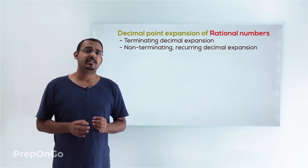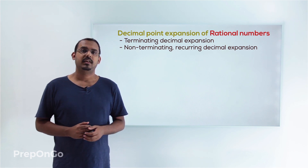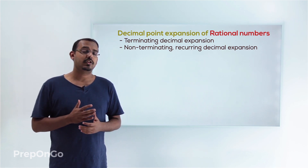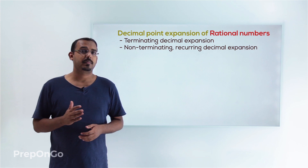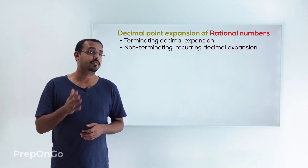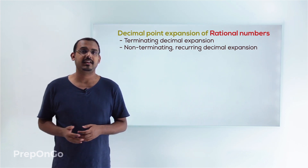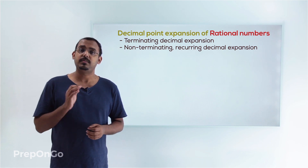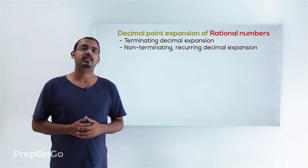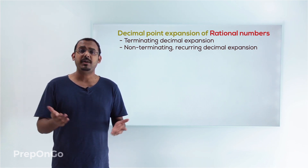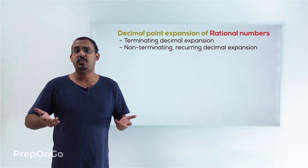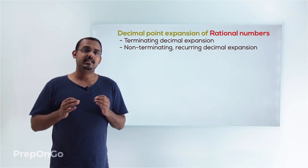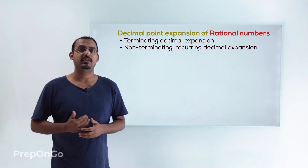Given a rational number P upon Q, can you figure out the nature of its decimal expansion — whether it is terminating or non-terminating recurring — without actually going through the process of long division? You might be wondering if it is possible to do that. Well, we'll see a method using which we can conclude this.